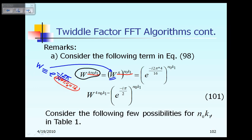That is the definition of W. Now when you take that W and raise it to the power of 4, and then raise it to the power N0K1, you first apply the exponent of 4 to W, and then raise the result to the power N0K1.